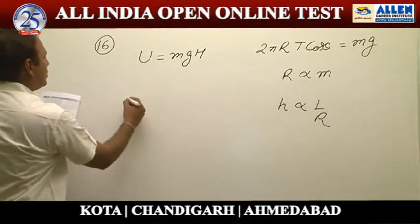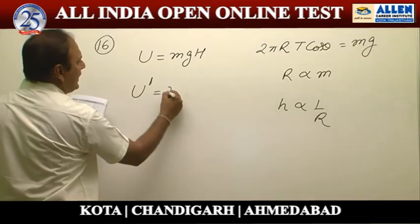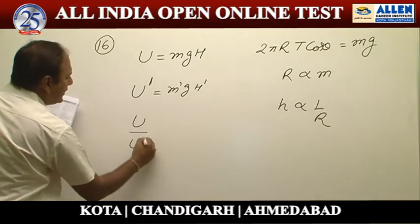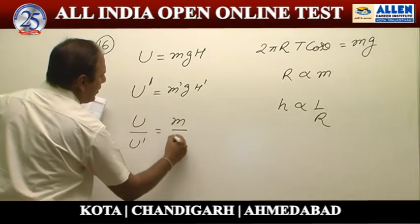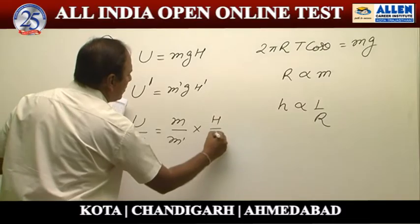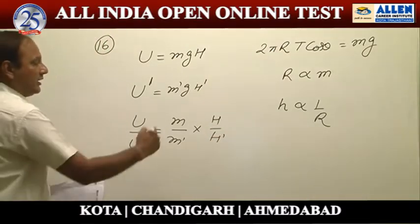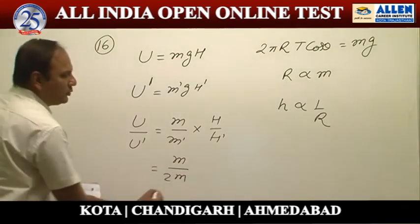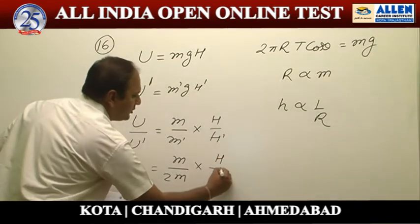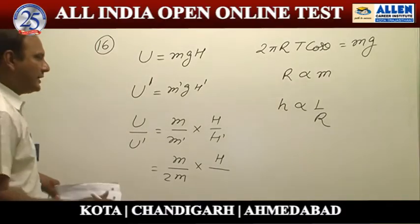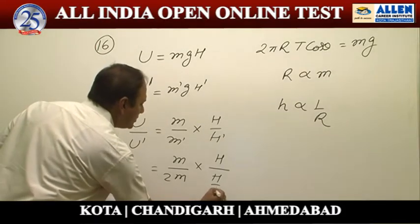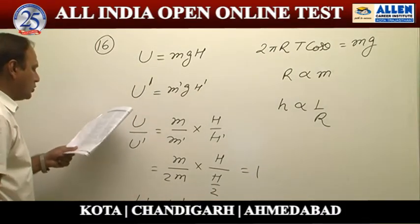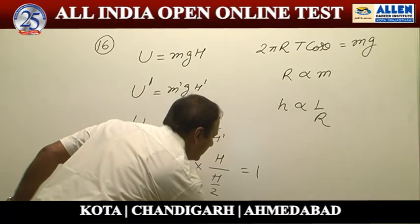According to Jurin's law, h is inversely proportional to r, so if radius is doubled, height becomes half. In the second case, potential energy U' = m'gh'. Setting up the ratio U/U' = (m/m') × (h/h'): since m' = 2m and h' = h/2, on solving we get U = U'. So the answer is option number 2.